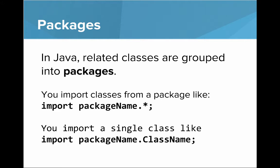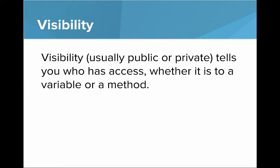Visibility, which is usually public or private, tells you who has access, whether it's to a variable or a method. We've been using public or private but we haven't really gone into what that really means.